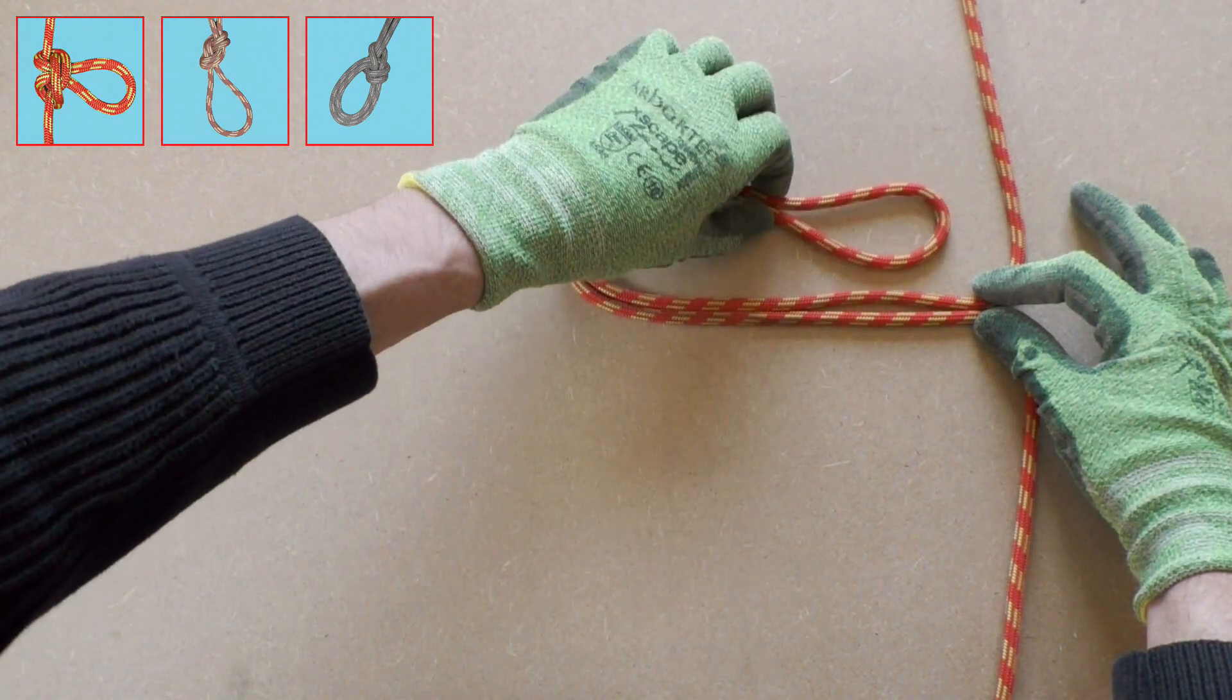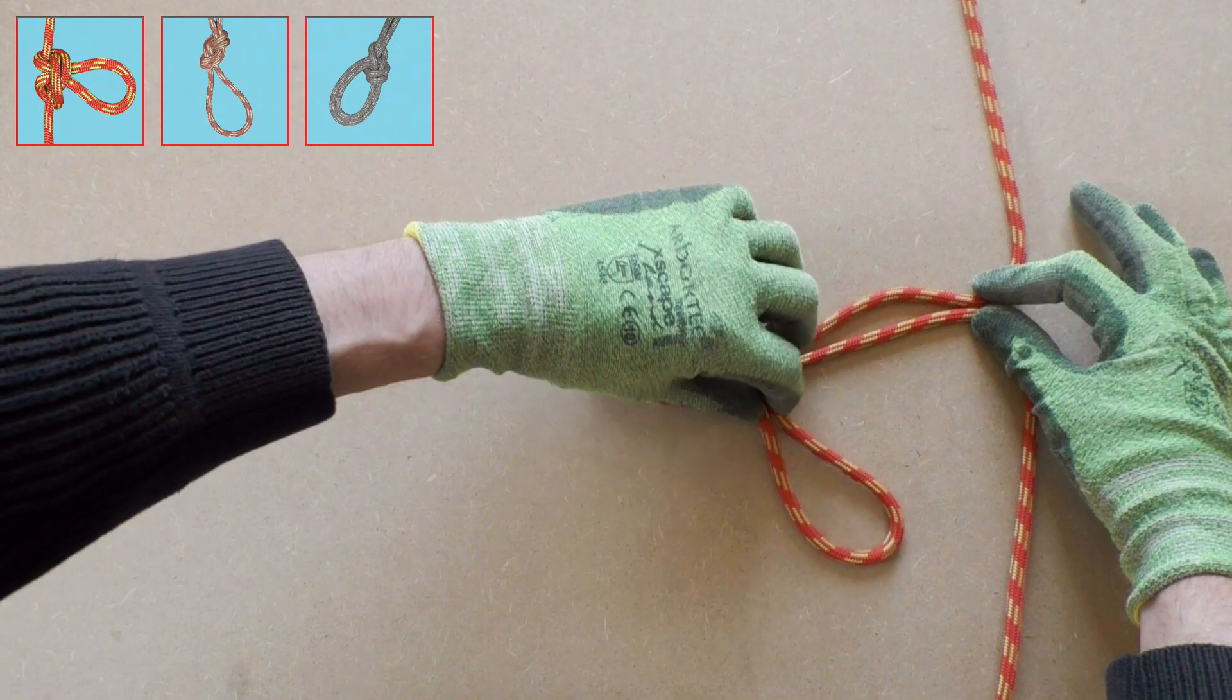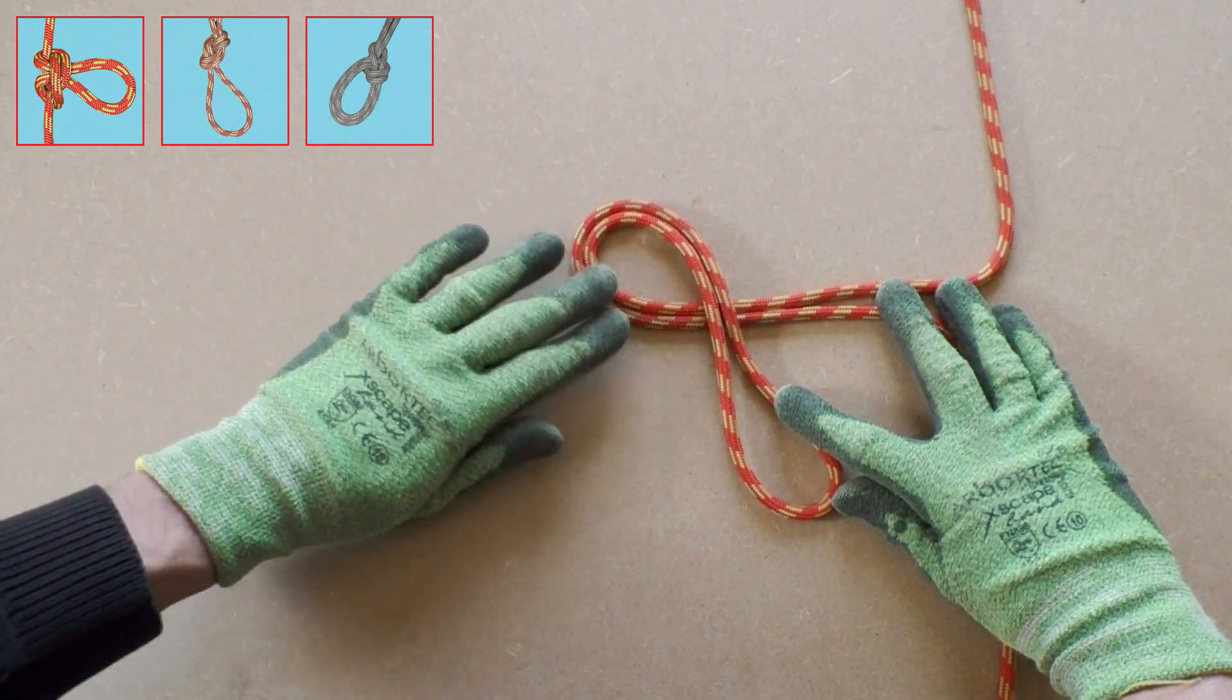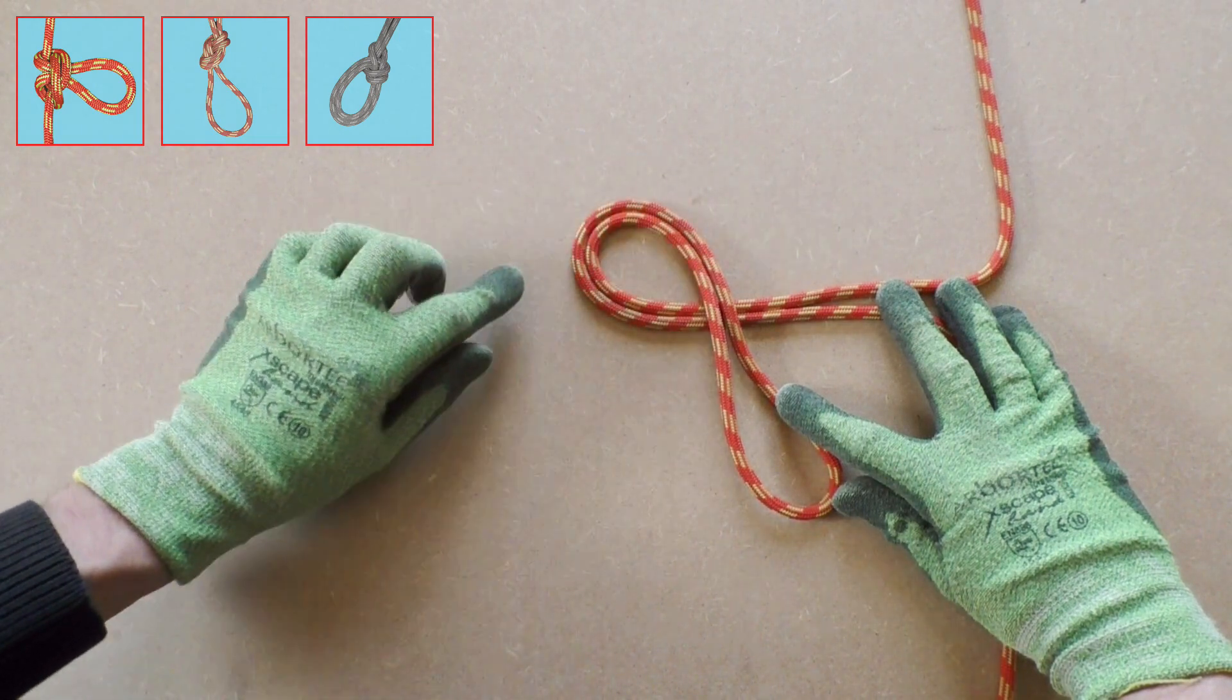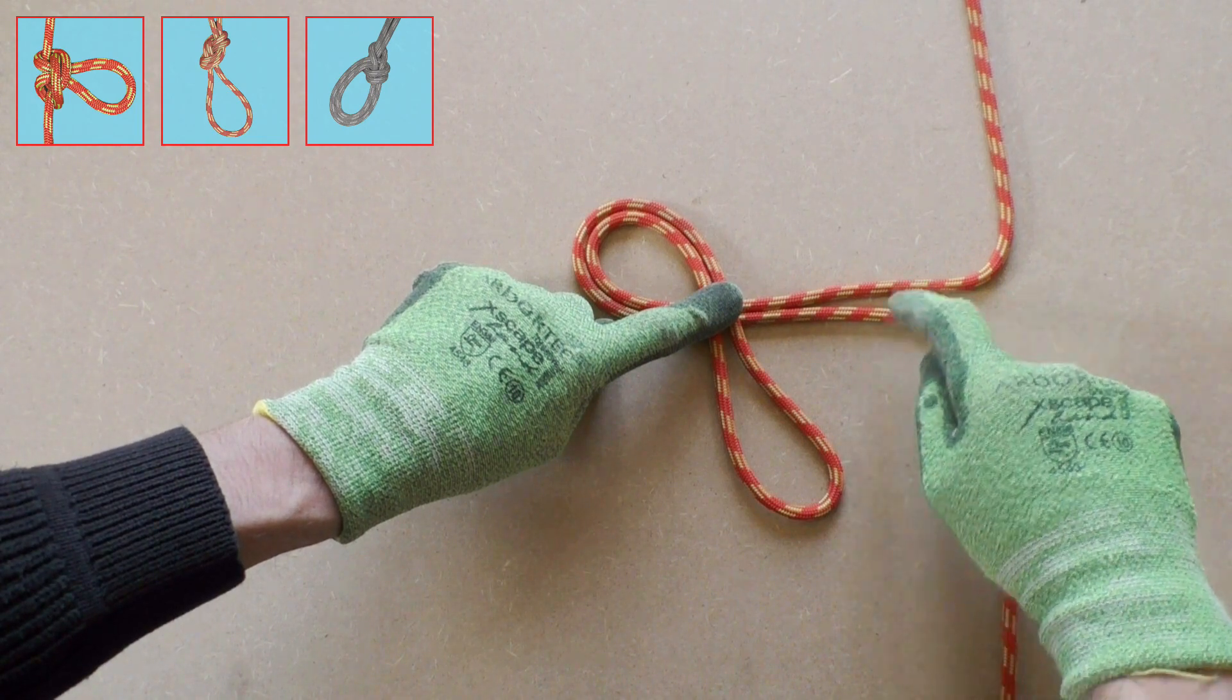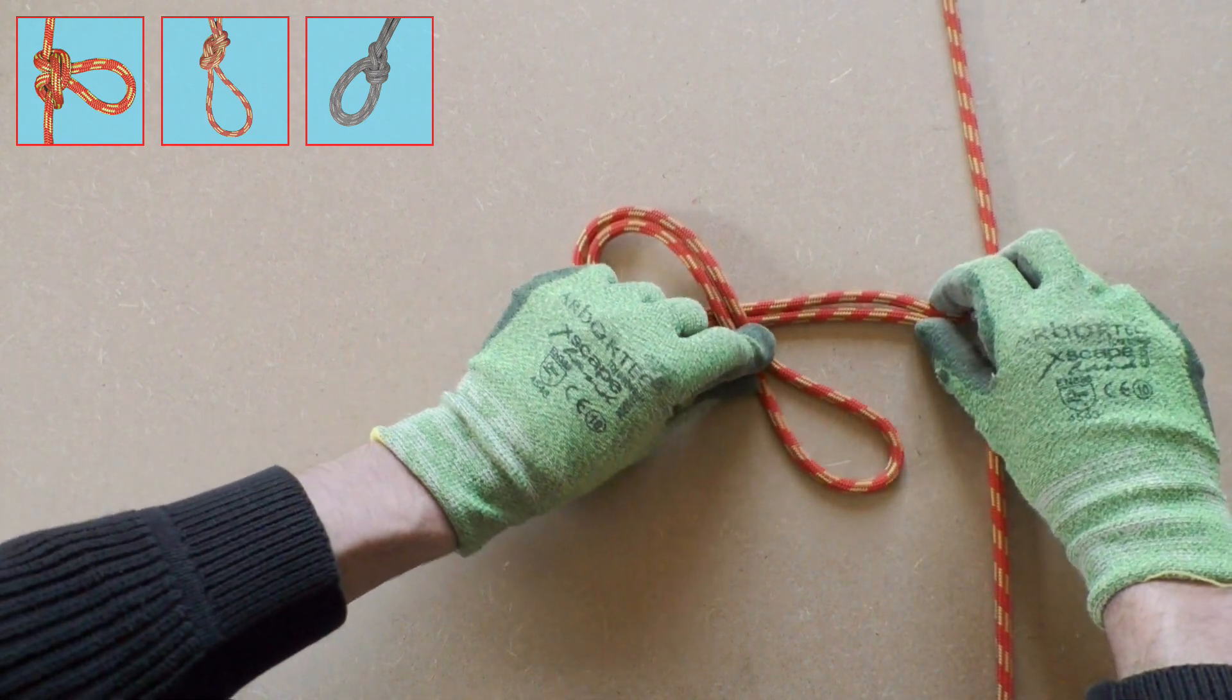Next we take this bite and fold it. Now we take the tip of the bite and bring it over its own standing part. For tying the figure 8 knot on a bite you don't need to have access to the end of the rope. That is extremely handy when working with long ropes.